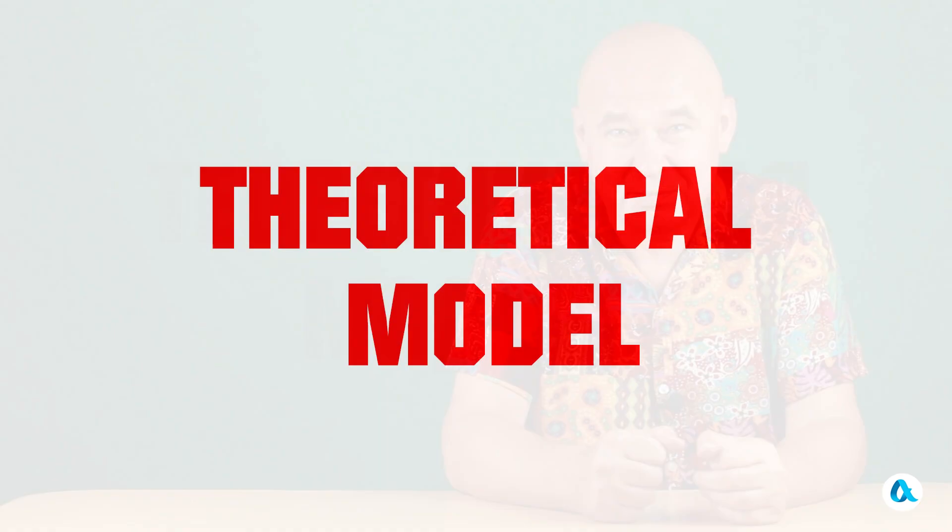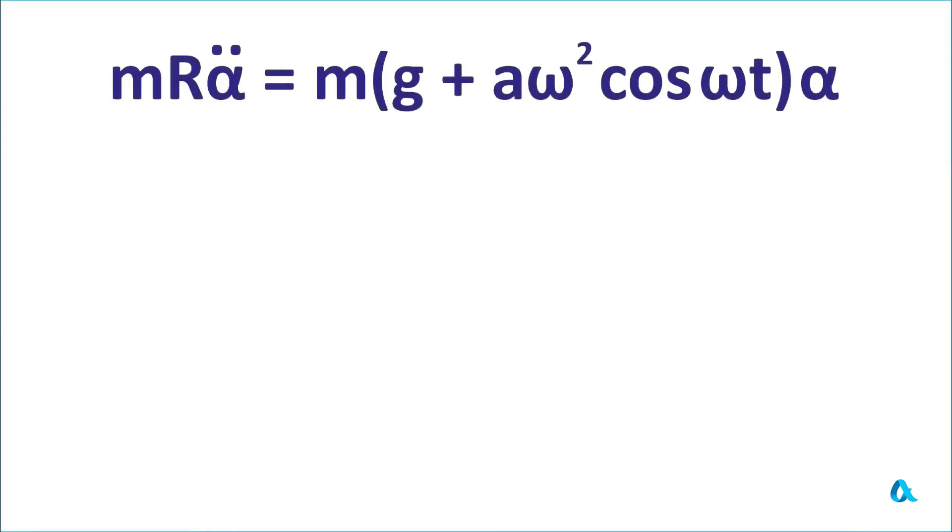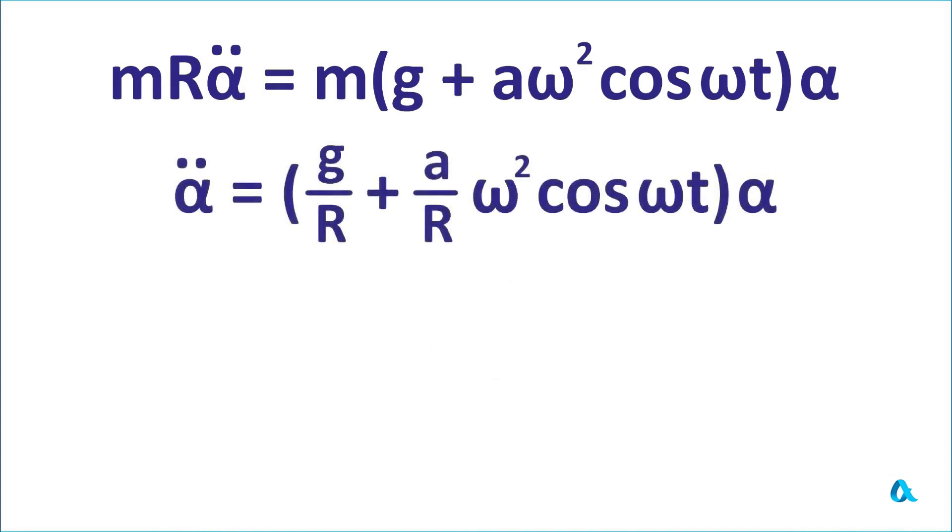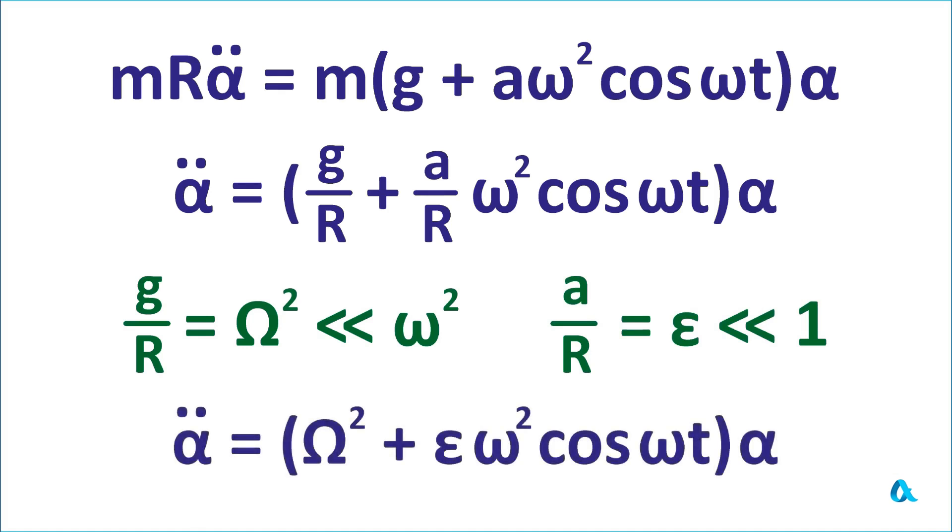Now we will bring this division of fast and slow movements to life. Let's write down Newton's second law for the inverted pendulum. We will simplify both sides by mass m and divide by the length of the suspension r. Note that g divided by r is nothing other than the square of the angular frequency of oscillations of a simple pendulum of length r. And this frequency Ω is much less than the frequency of oscillations of the suspension ω. Let the ratio of the piston amplitude a to the length of the suspension r be denoted by the letter ε. And this value is much less than 1. As a result, the equation of motion of the pendulum takes this form.